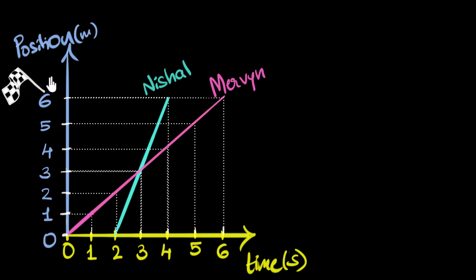A position time graph gives us the position of any object at any instant of time. For example, this is Mervyn's graph. It says that at time zero, he was at zero. This is the starting line.